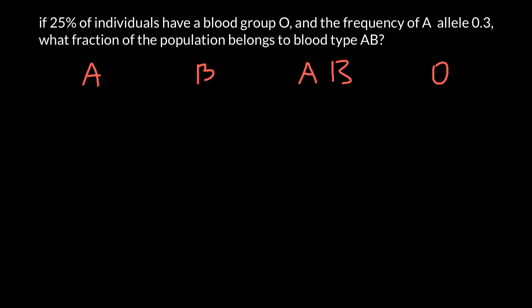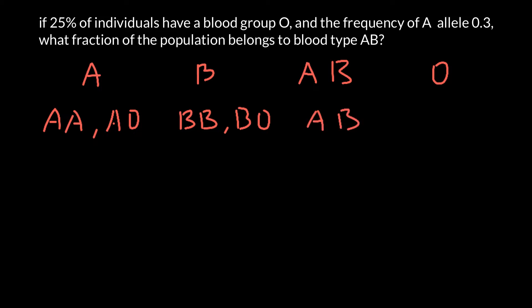But these three alleles make six genotypes. For example, blood group A is made by genotype AA and AO. Blood group B is made by genotype BB and BO. Blood group AB is made with only one genotype, AB. And blood group O is also made with only one genotype, which is OO. Allele A and B are co-dominant, and both these alleles are dominant over the allele O. That's why we have four blood groups and six genotypes.